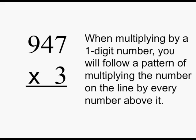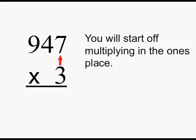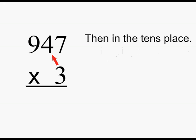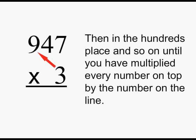When multiplying by a one-digit number, you will follow a pattern of multiplying the number on the line by every number above it. You will start off multiplying in the ones place, then in the tens place, then in the hundreds place, and so on until you have multiplied every number on top by the number on the line.